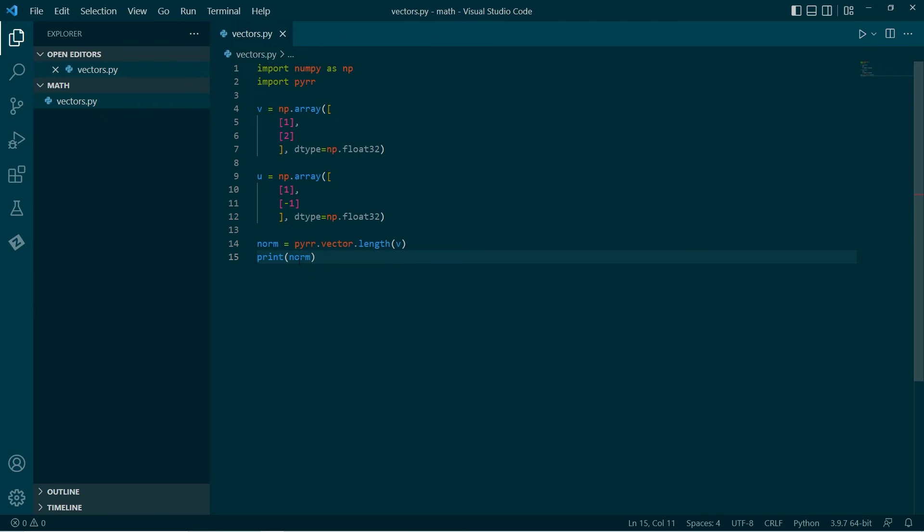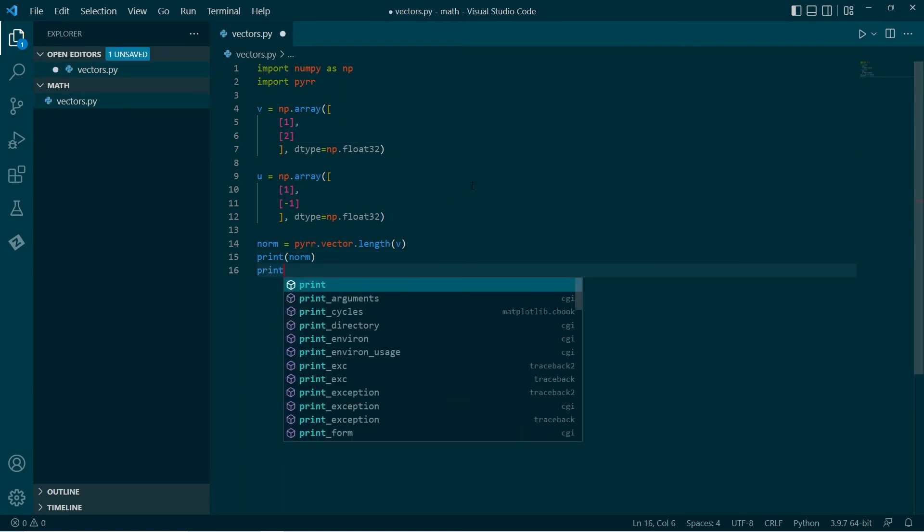So before I do this, let's have a look at it. Pythagoras' theorem, we have this component squared is 1, this component squared is 4, 1 plus 4 is 5, and so it should be the square root of 5. So let's print that out.